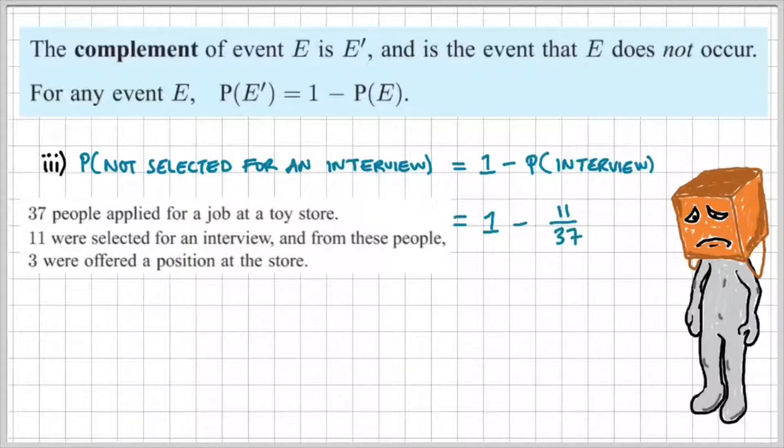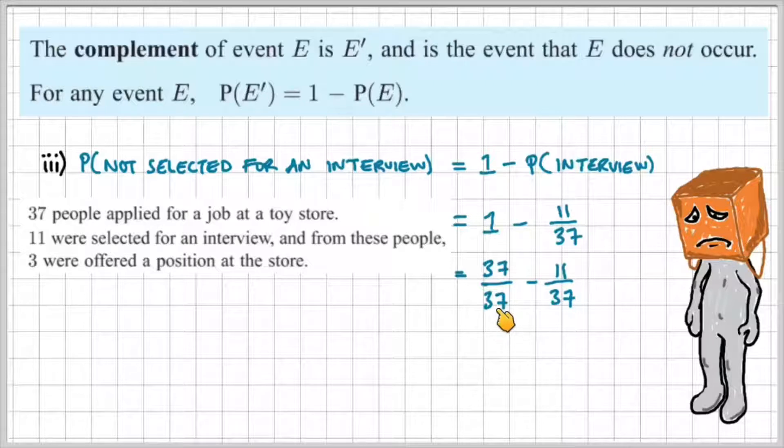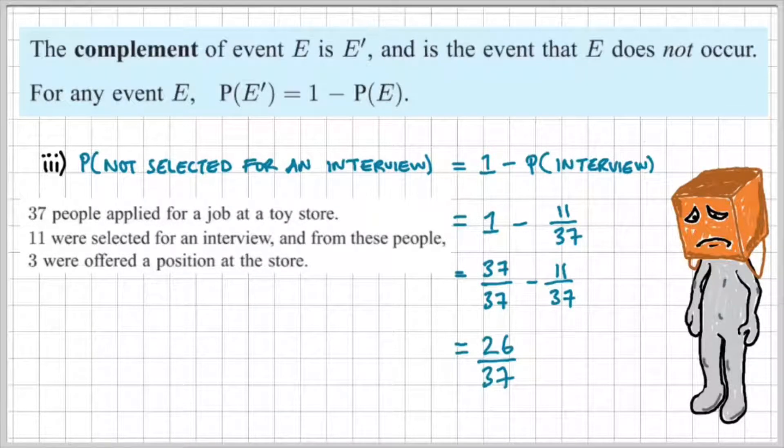So 1 minus 11 out of 37, which is basically the same as saying 37 over 37 minus 11 over 37, which is equal to 26 out of 37. So therefore, 26 out of 37 people were not selected for an interview.